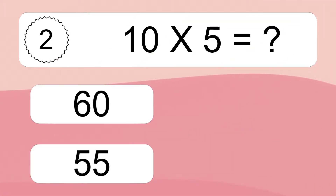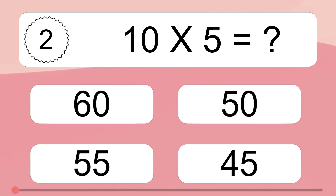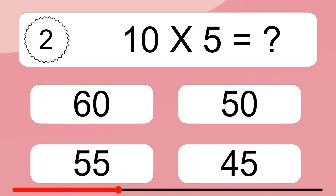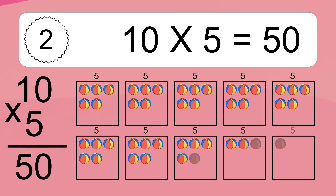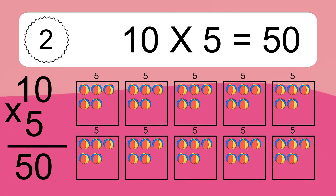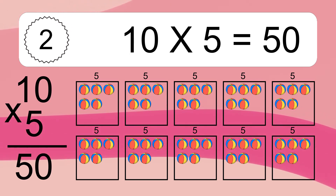Ten times five equals what? Ten times five equals fifty. We have ten boxes, and each box has five colorful balls inside. If you count all the balls in all the boxes together, you will have ten times five balls. This equals fifty balls.